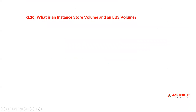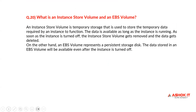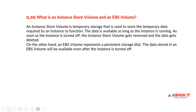What is the difference between an instance store volume and an EBS volume? An instance store volume is temporary storage used to store temporary data required by an instance to function. The data is available as long as the instance is running; as soon as the instance is turned off, the instance store volume is removed and the data gets deleted. On the other hand, an EBS volume represents a persistent storage disk — data stored in an EBS volume will be available even after the instance is turned off.